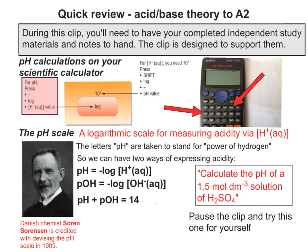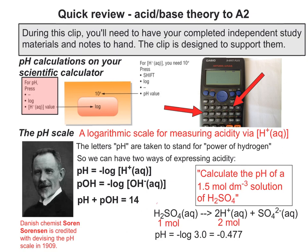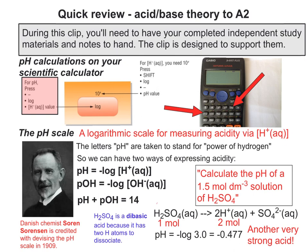Here's a third one to have a go at — pause the clip and try it. This is what we call a dibasic acid because it has two hydrogen atoms in its molecule, both of which could potentially dissociate. Assuming complete dissociation, the hydrogen ion concentration is twice the concentration of the acid itself. Doubling 1.5 gives 3.0, so the pH = -log(3.0) = -0.477, which as expected is a very strong acid.